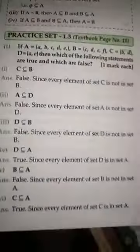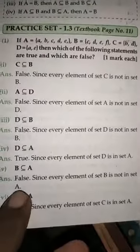Now we will do Practice Set 1.3. If A = {a, b, c, d, e}, B = {c, d, e, f}, C = {b, d}, D = {a, e}, then which of the following statements are true and which are false?